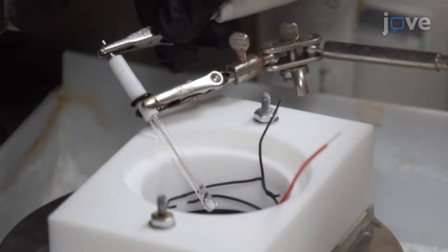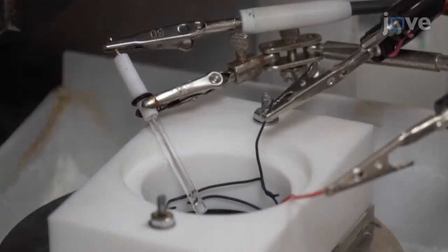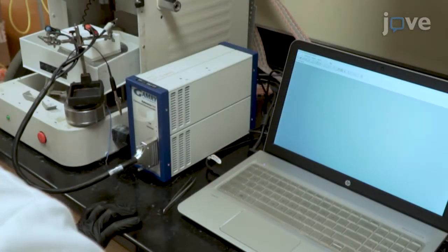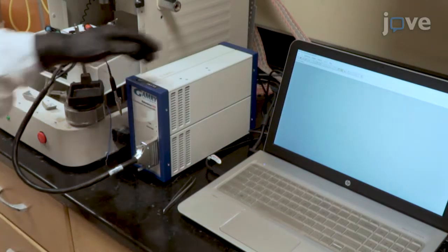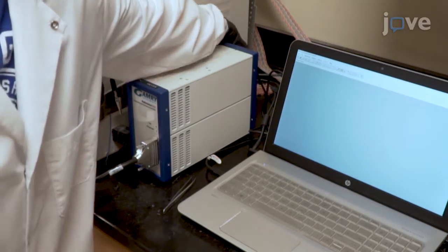Connect the electrodes with the potentiostat, taking care that the electrodes are not touching, and open the electrochemical software package that interfaces with the USB-controlled potentiostat to turn on the potentiostat.